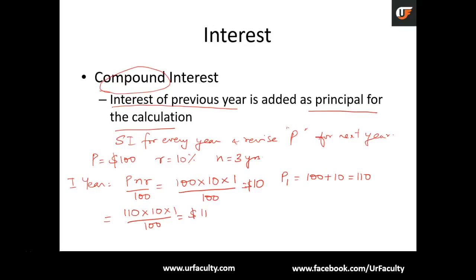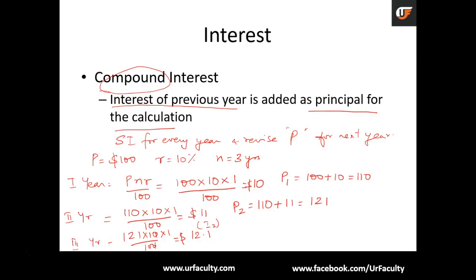The answer for year 2 is $11. The new principal P1 is 110 + 11 = 121. For the third year: 121 × 10 × 1 / 100 = $12.10. The final amount is 121 + 12.10 = $133.10. So that is the calculation to get the amount at the end of 3 years.